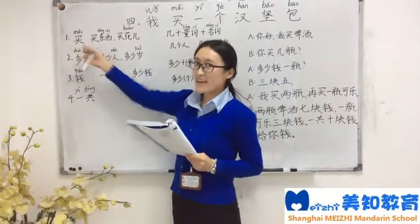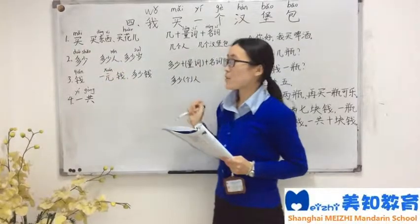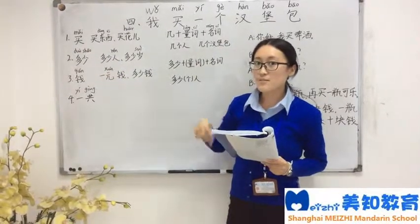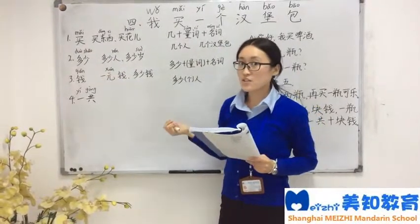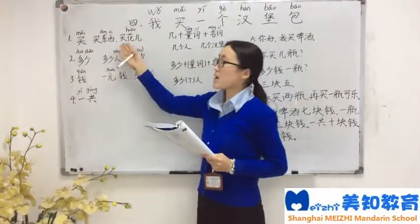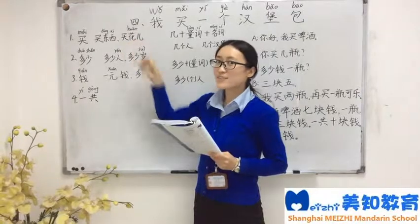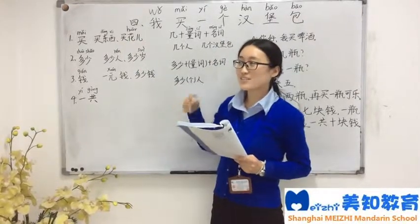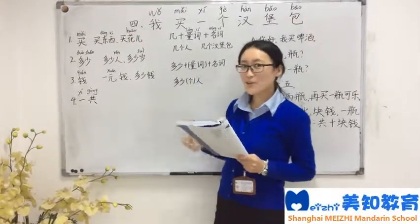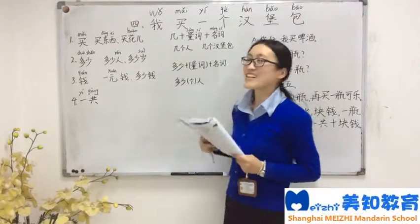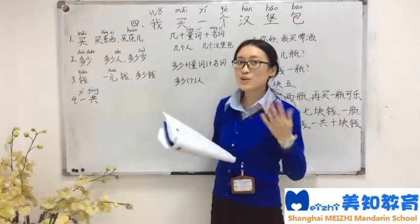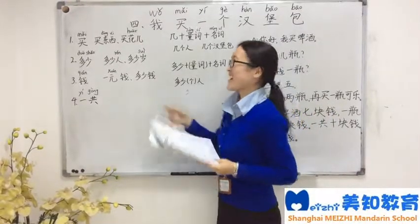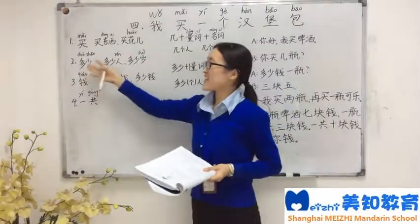First one: 买. For example, 买东西 means 'buy things', 买花 means 'buy flowers'. Do you like flowers? 你喜欢花吗?